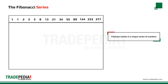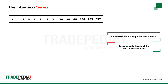The first thing we notice about this series of numbers is that each number is the sum of its previous two numbers. 8 plus 13 equals 21, and 13 plus 21 equals 34.